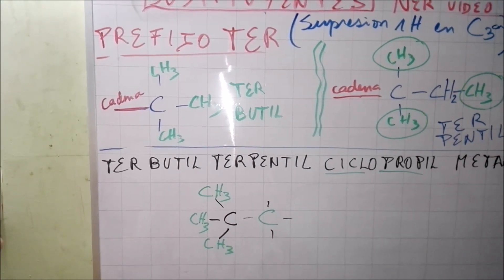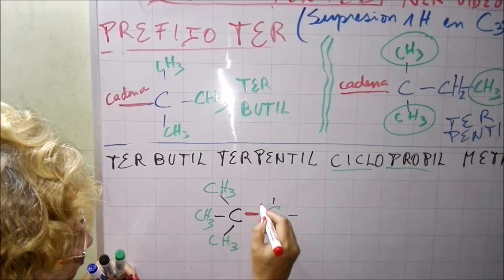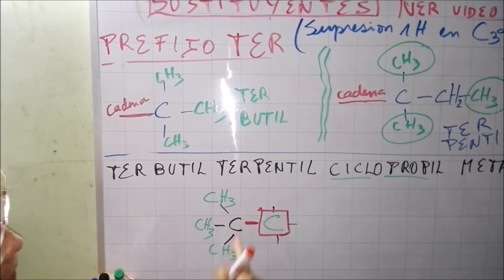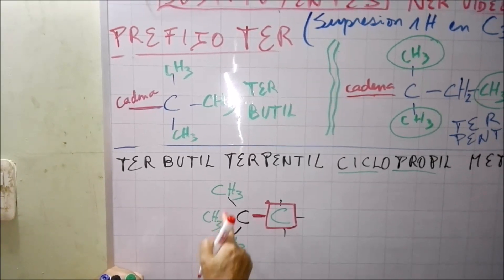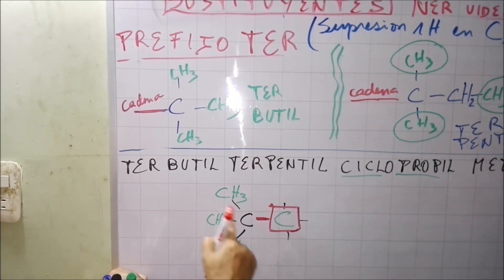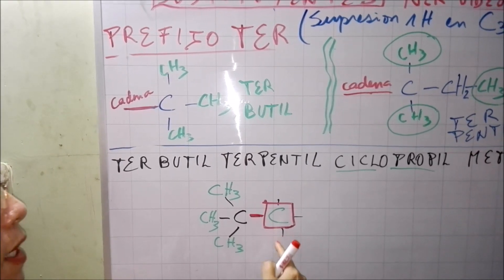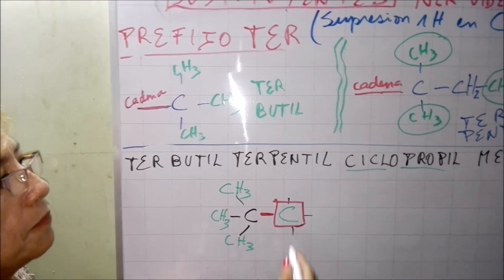Aquí agarro a la cadena principal que es mi metano. Entonces mira aquí tengo el carbono, aquí tengo 1, 2, 3, 4. Aquí tengo el terpentil.